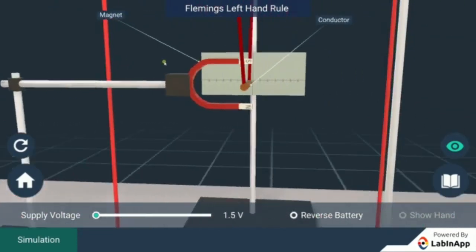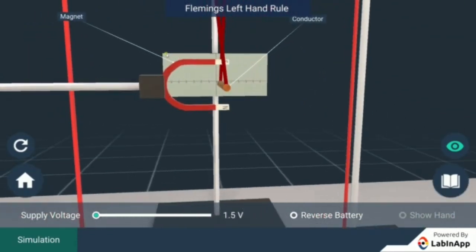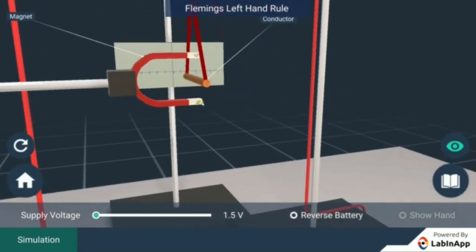The horseshoe magnet is positioned such that the north pole is below and the south pole is above it. This means the magnetic field is vertically upwards.